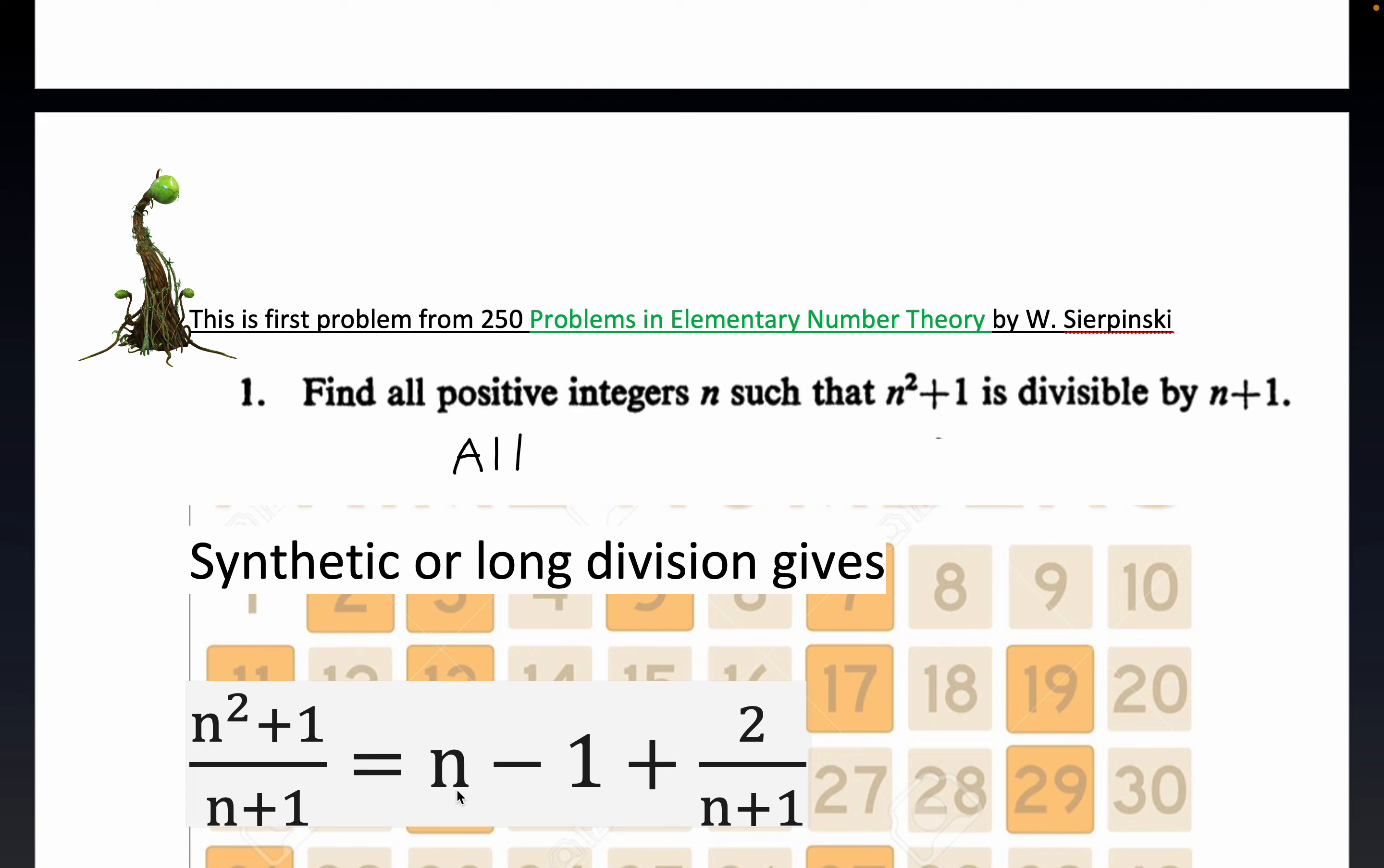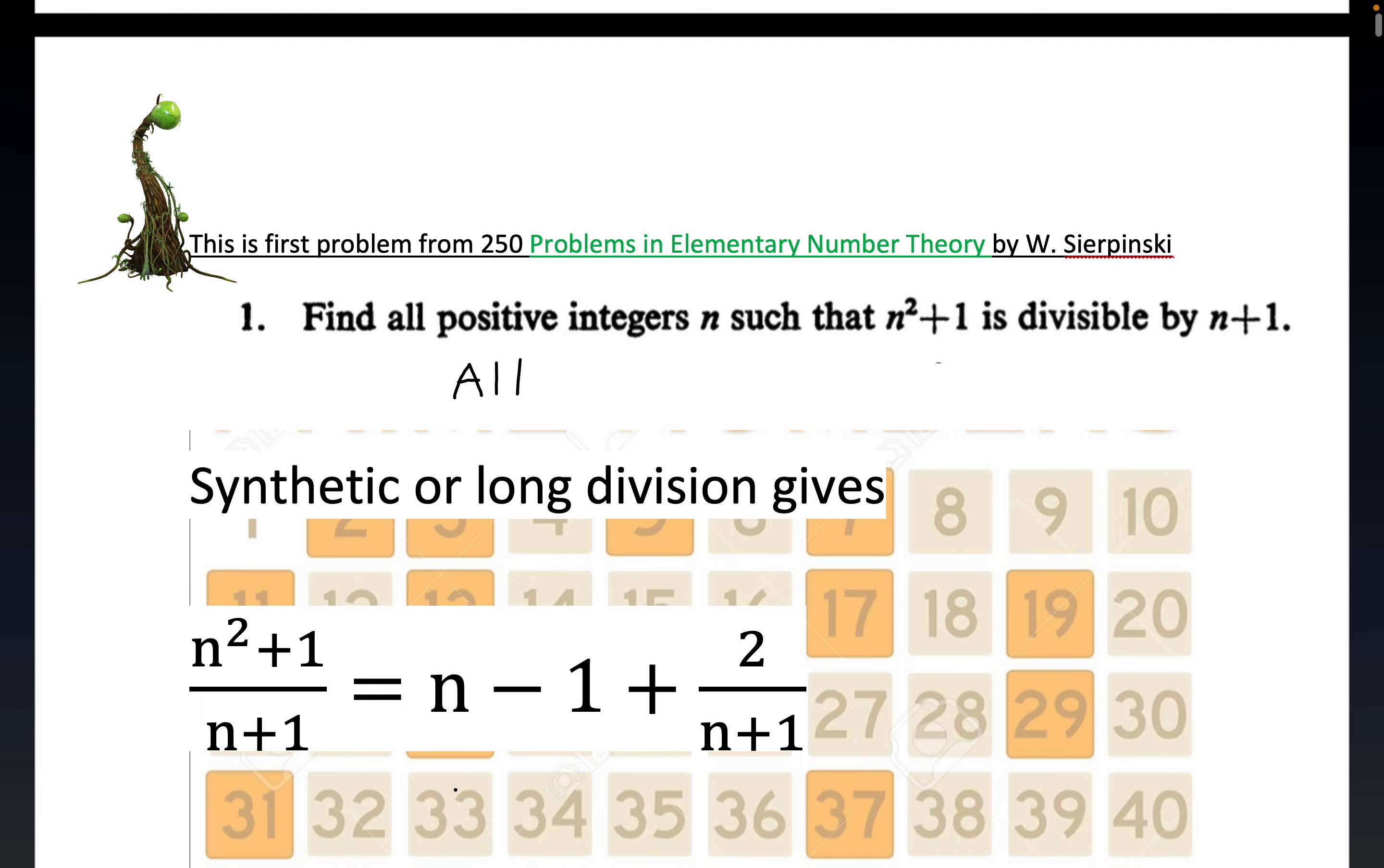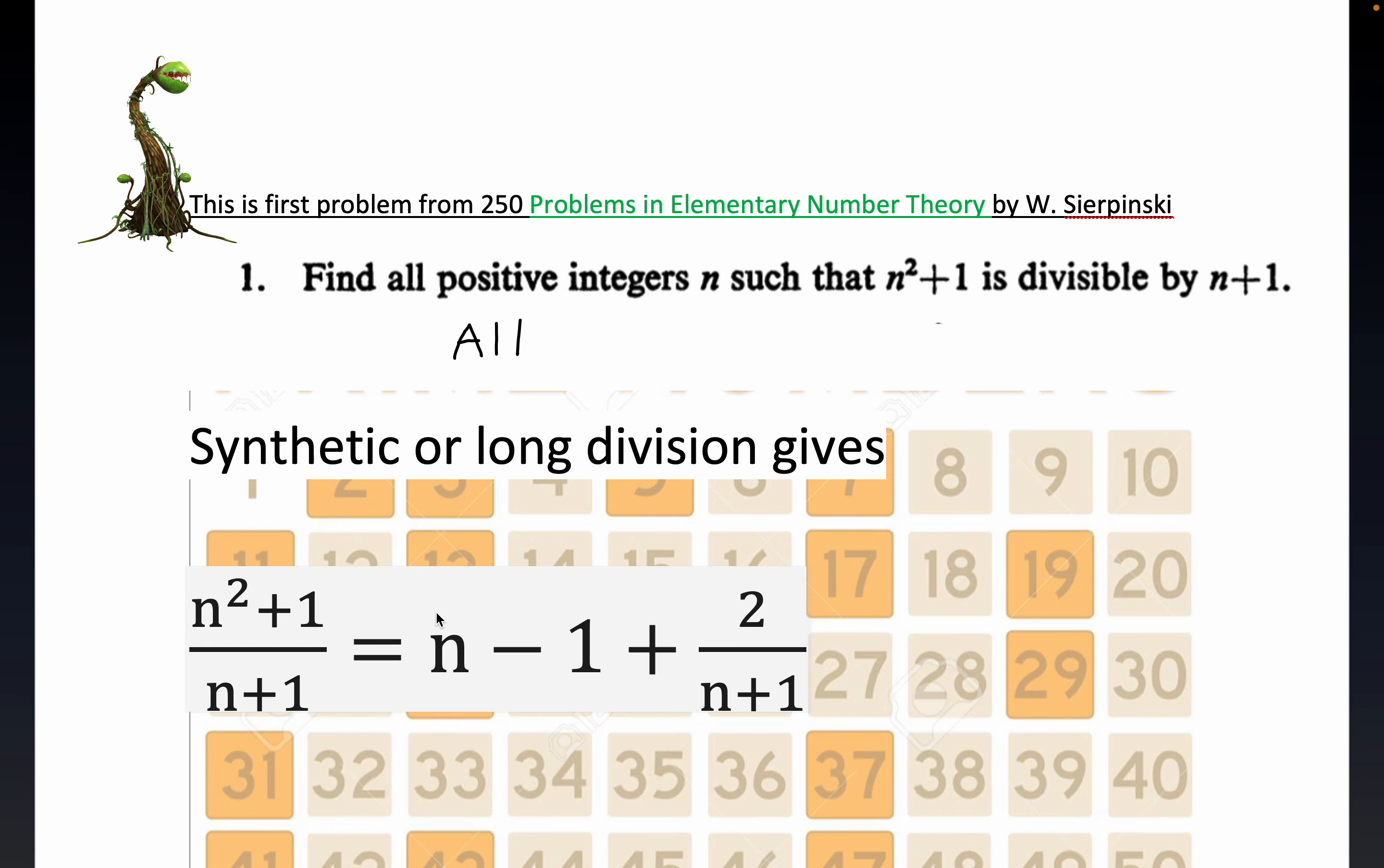Now, this makes it very easy to determine exactly when the given quotient is going to be equal to an integer. First of all, this piece right here, the circle piece right here, is always an integer, right? I'll write it's a member of Z always.